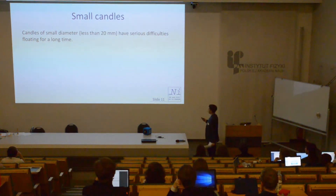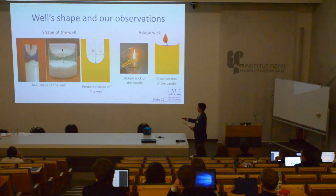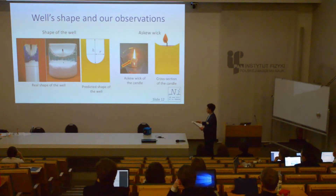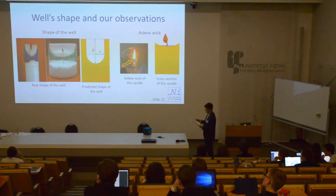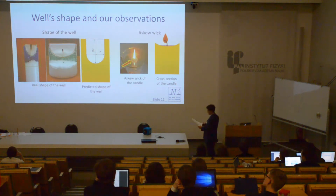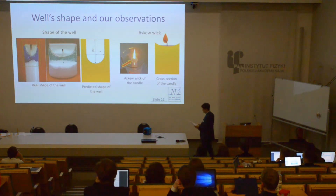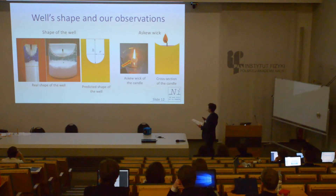Our next observation was that the predicted shape of the well was approximately correct. As we can see in the photos, the shape of the well in the actual candles was very similar to what we predicted. We also discovered that the wick has a dangerous tendency to tip towards one edge of the candle. This is dangerous because the flame is no longer in the center, so one part of the well receives much more heat than the other and may easily melt, allowing water to enter the well and sink the candle.